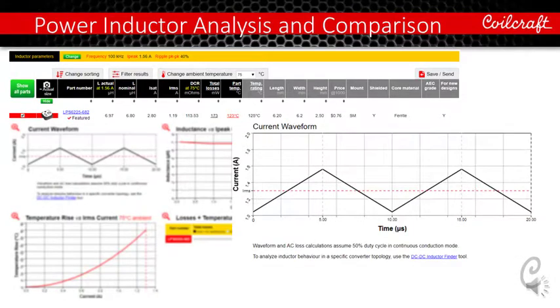So we are also showing the current waveform which the loss calculation is based on. In this tool, we assume the waveform is 50% duty cycle in continuous conduction mode. If you like to analyze the losses in specific converter conditions, we have the DC to DC inductor finder tool for that purpose. You can click this link below the current waveform. It will direct you to that tool.